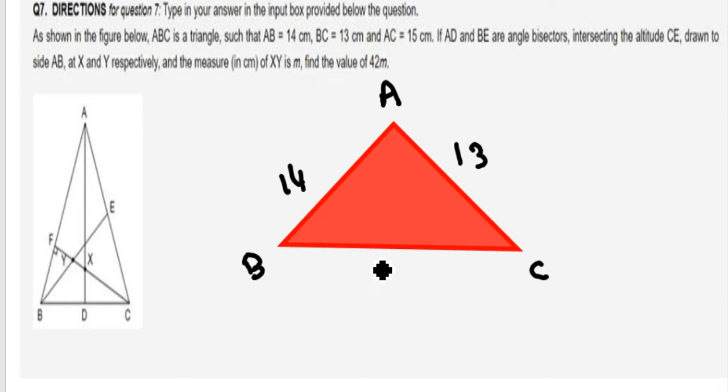Sorry that is nothing but 14, 13 and 15 and we know 14, 13, 15 is the special case of conjugating numbers whose area is nothing but 84 cm square. You can find it by the Heron's formula also.